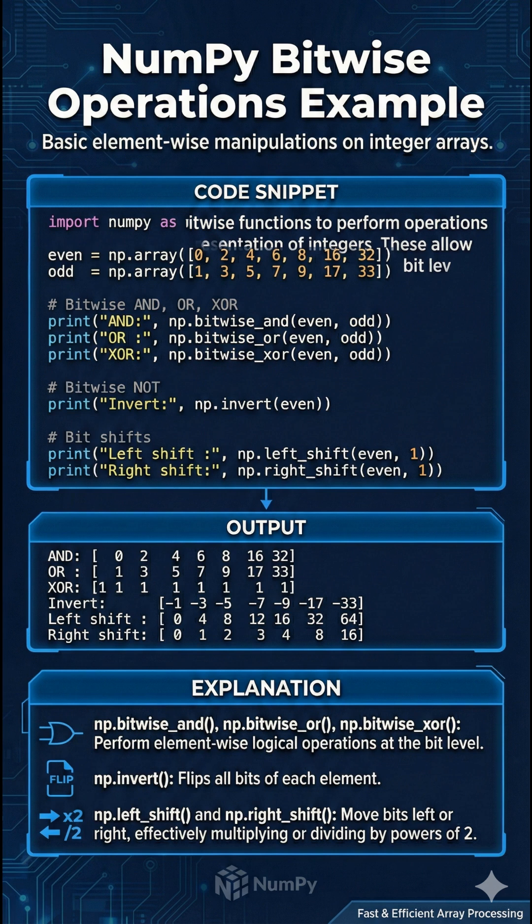Finally, it illustrates bit shifting. np.left_shift moves bits one position to the left, effectively multiplying the values by 2 — for example, 2 becomes 4. Meanwhile, np.right_shift moves bits to the right, effectively dividing them by 2 — for example, 2 becomes 1.